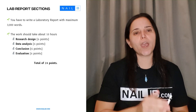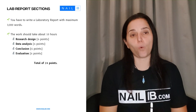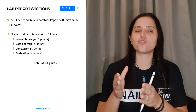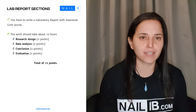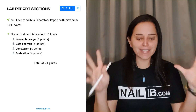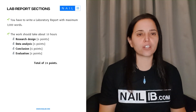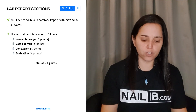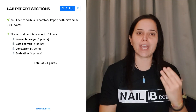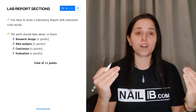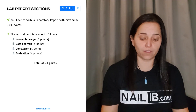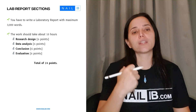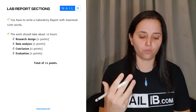What I'm going to do is go through every section of this lab report, making sure that you know exactly where to focus your energy and what are the things that you shouldn't be doing in each section. There are four sections: research design, data analysis, conclusion, and evaluation. Each one of these has six points. I'm going to go through each one and tell you what are the important things that you must address.